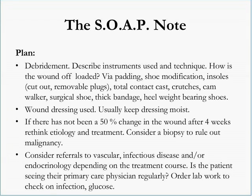One important thing to look at is how many times the patient has come back for treatment. A rule of thumb is 50% change in the wound after four weeks. If that's not being seen and the patient is coming back week after week for a month or more, you have to rethink the etiology of the wound — is it a diabetic foot ulcer, or is it something else? Rethink your treatment plan. Getting back to pigmented lesions — it doesn't have to be pigmented necessarily, but it can be a malignancy in the ulcer. The ulcer itself could be a malignancy, not a diabetic foot ulcer at all — such as squamous cell carcinoma or ulcerated skin cancer. Biopsies at the periphery or multiple points of the wound should be considered.